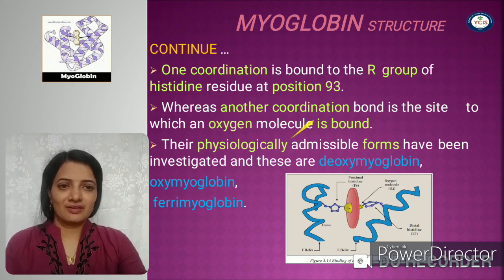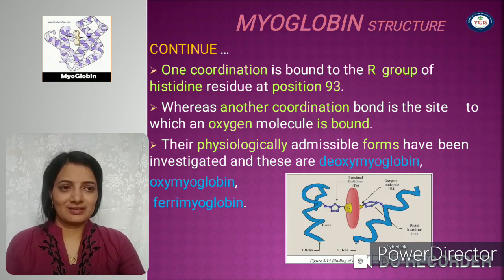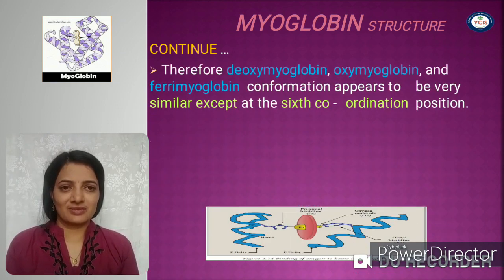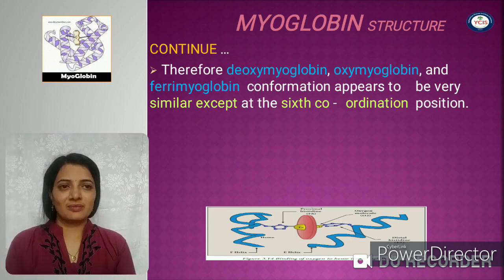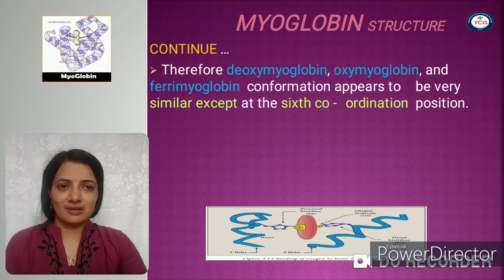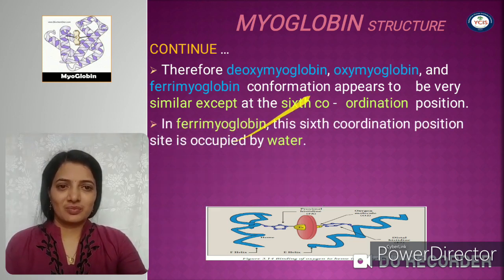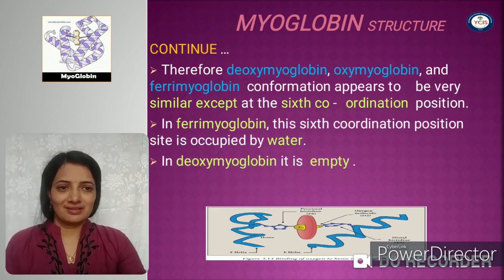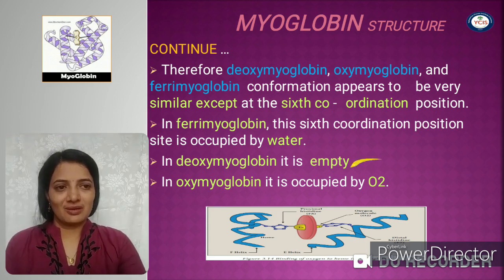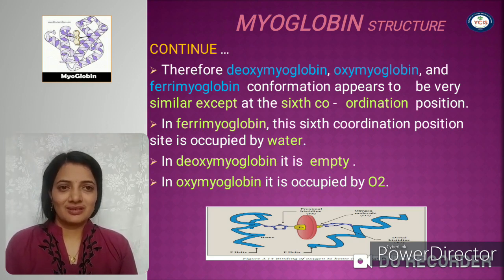Physiologically, there are different forms of myoglobin: deoxymyoglobin, oxymyoglobin, and ferrimyoglobin. These conformations are similar except for their 6th coordination position. When a water molecule is present at the 6th coordination position, the molecule is referred to as ferrimyoglobin. When the 6th coordination position is empty, it is called deoxymyoglobin. When the 6th coordination position is occupied with oxygen, it is referred to as oxymyoglobin.